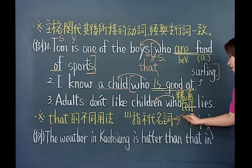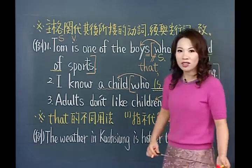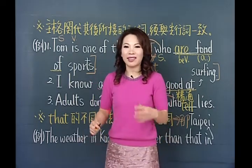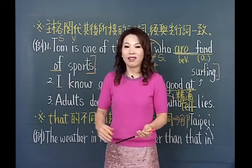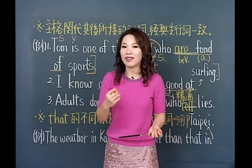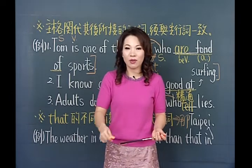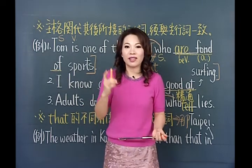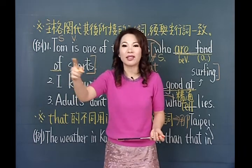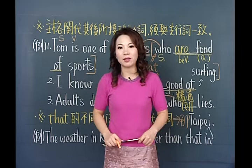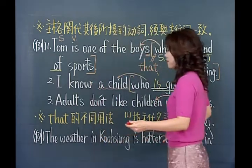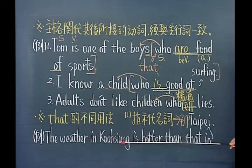很多同学看到that会造成困扰，因为that有几种不同的用法。第一种：that当指示代名词，解释成「那个」。为什么叫指示代名词？因为它是有方向性的，this跟that常常摆在一起：this指距离近的，that指比较远的那个东西，讲清楚是哪一个。例句：the weather in 高雄is hotter than that in Taipei，这里的that是指示代名词。